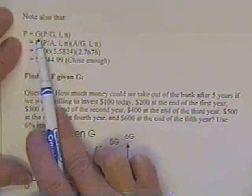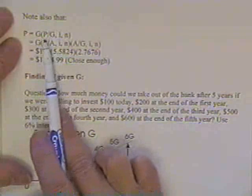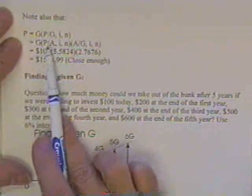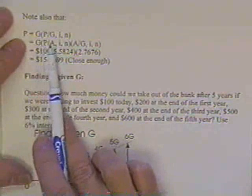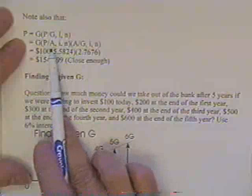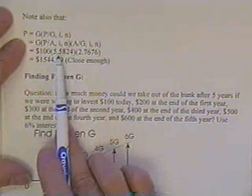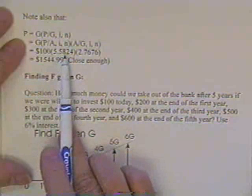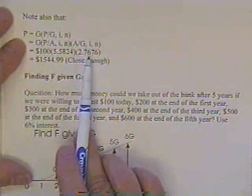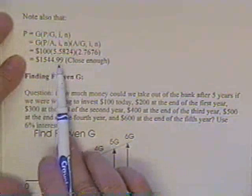Note also that if you want G, and if the tables didn't have P over G, yours do, we just proved that, but you could instead multiply G times P over A times A over G. If you go check these factors in the book, you'll find the P over A factor for 6% 7 years is 5.5824. You'll find that the A over G factor is 2.7676, which get together and still give you $1,544.